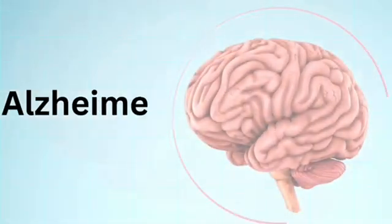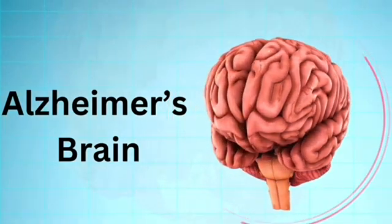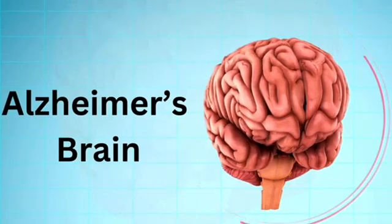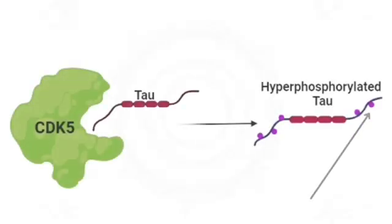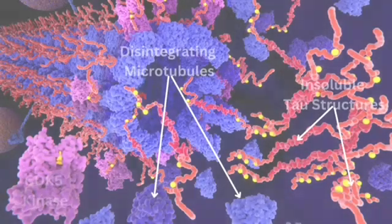Now that you are familiar with these proteins, let's explore how they contribute to the development of Alzheimer's disease. To start off, the tau protein is severely hyperphosphorylated by the CDK5 kinase through the addition of multiple phosphate groups. This causes the tau protein to detach from microtubules and form insoluble structures.